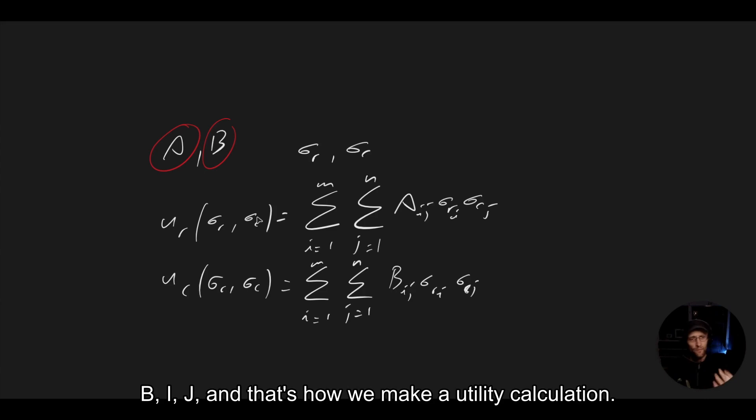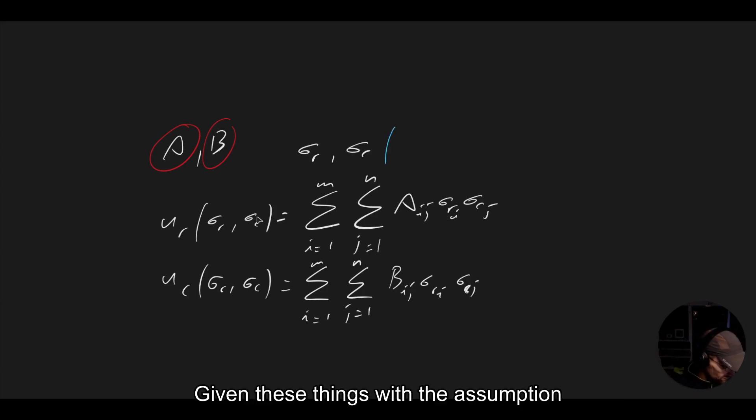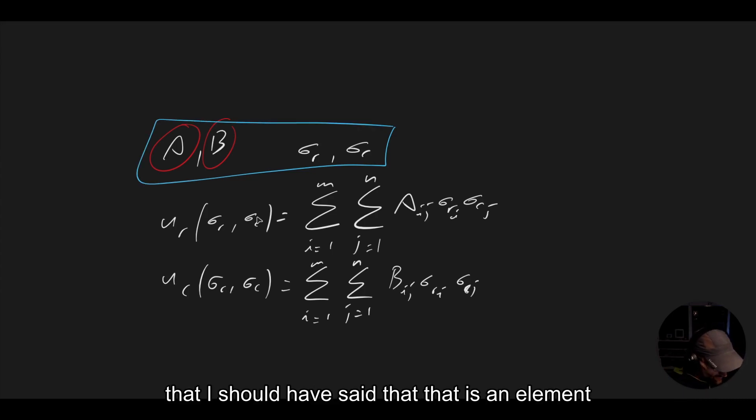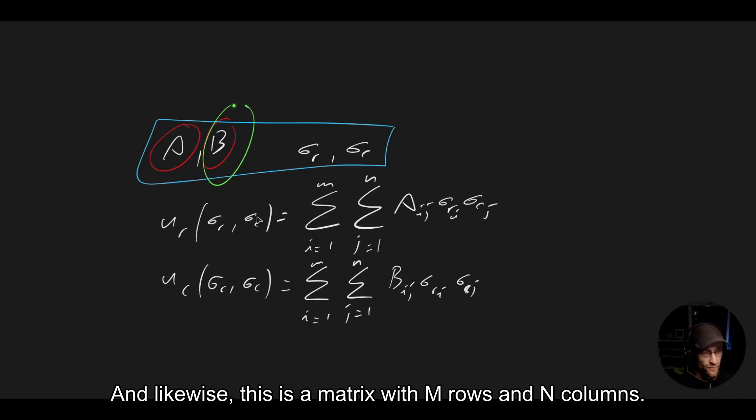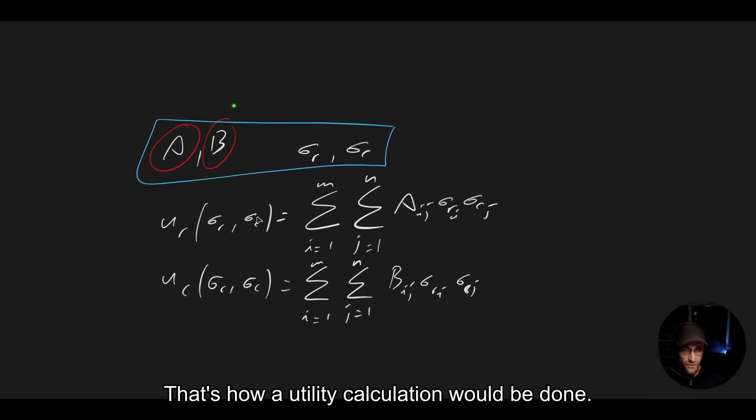And so that's how we'd make a utility calculation given these things, with the assumption that this is an element of a real matrix with M rows and N columns. And likewise, this is a matrix with M rows and N columns. That's how a utility calculation would be done.